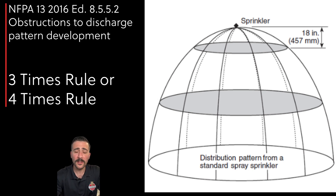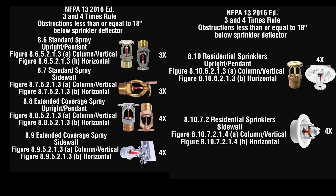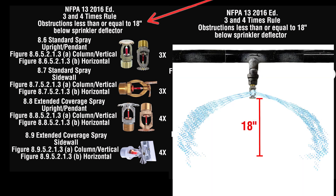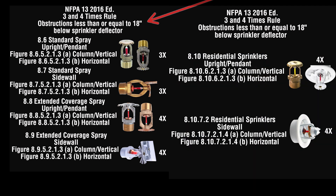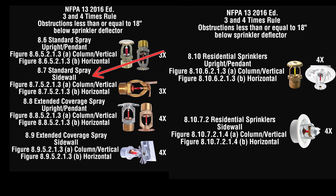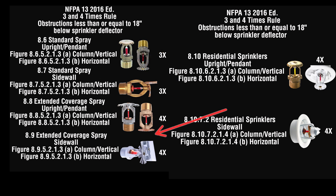This is where you will learn the three and the four times rule. Here you can see all the different style heads listed in NFPA 13 that utilize the three and the four times rule for obstructions that are less than or equal to 18 inches below the sprinkler deflector. The standard spray upright, pendant, and standard spray sidewall utilize the three times rule. The extended coverage upright, pendant, sidewall, and the residential upright, pendant, sidewall will utilize the four times rule.